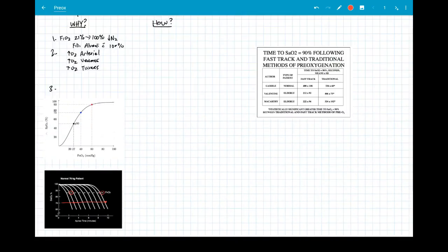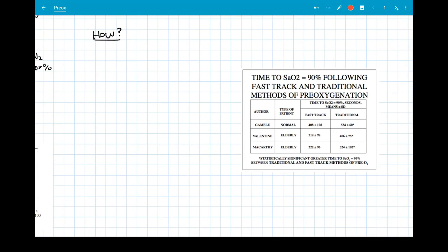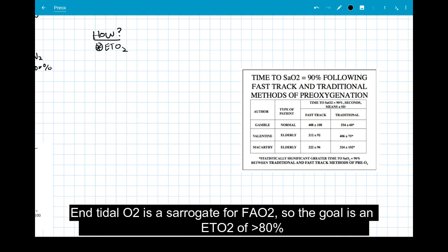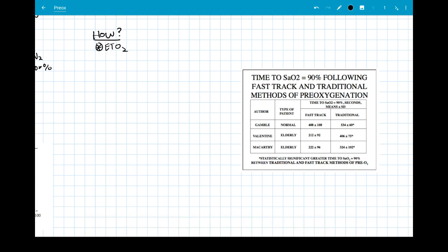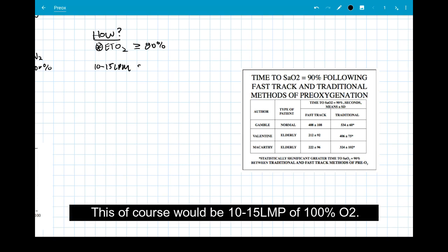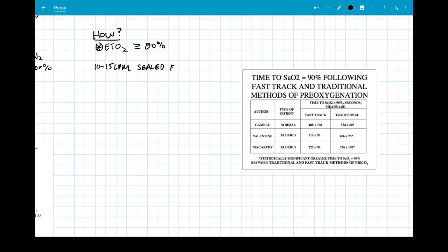So now moving on to how do we pre-oxygenate? First off, we need a way to monitor our end-tidal oxygen. Modern anesthesia machines all monitor end-tidal oxygen. Our goal is to have the end-tidal oxygen greater than or equal to 80%. The studies we showed before were all with 87%, but our main goal is to get it at least to 80% before inducing anesthesia. We do this by giving the patient 10 to 15 liters per minute of a sealed face mask with 100% oxygen.